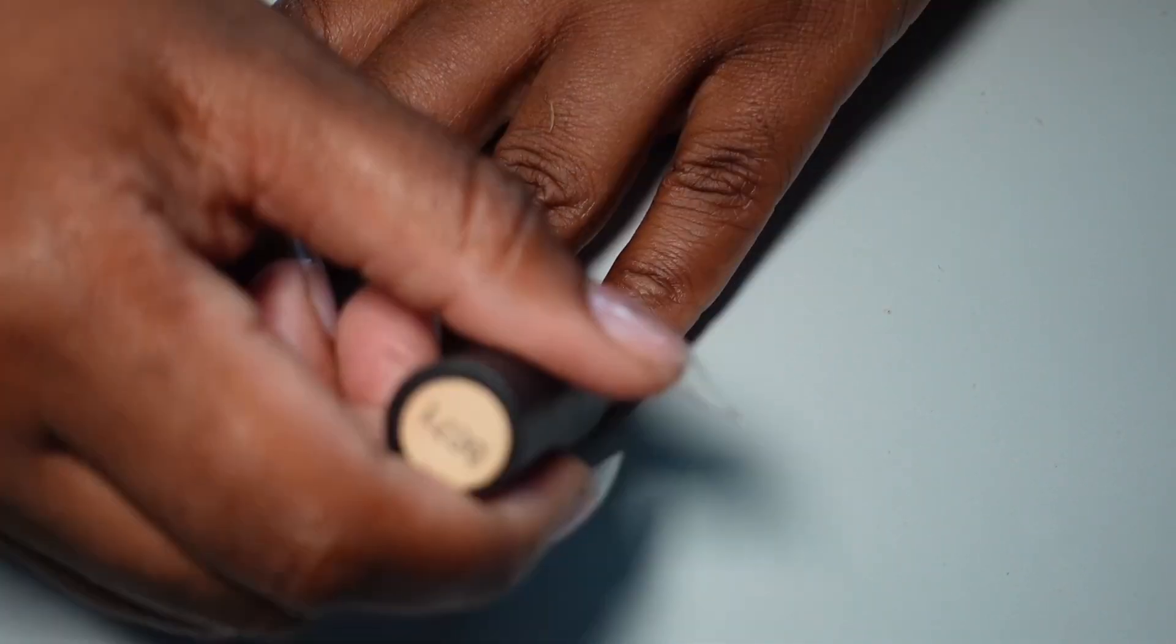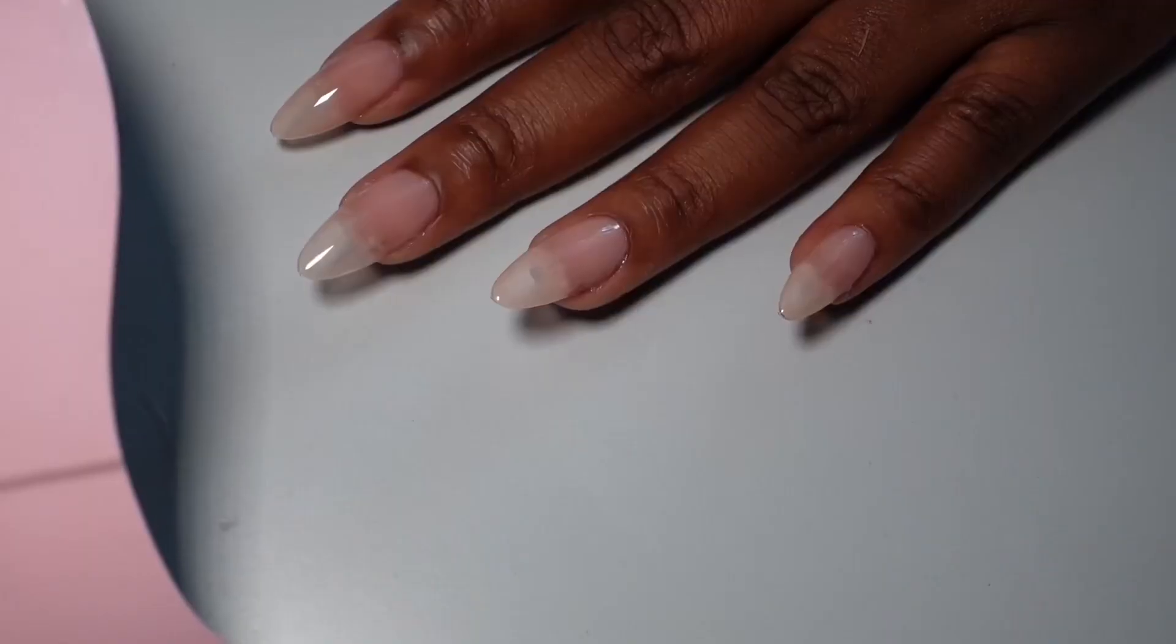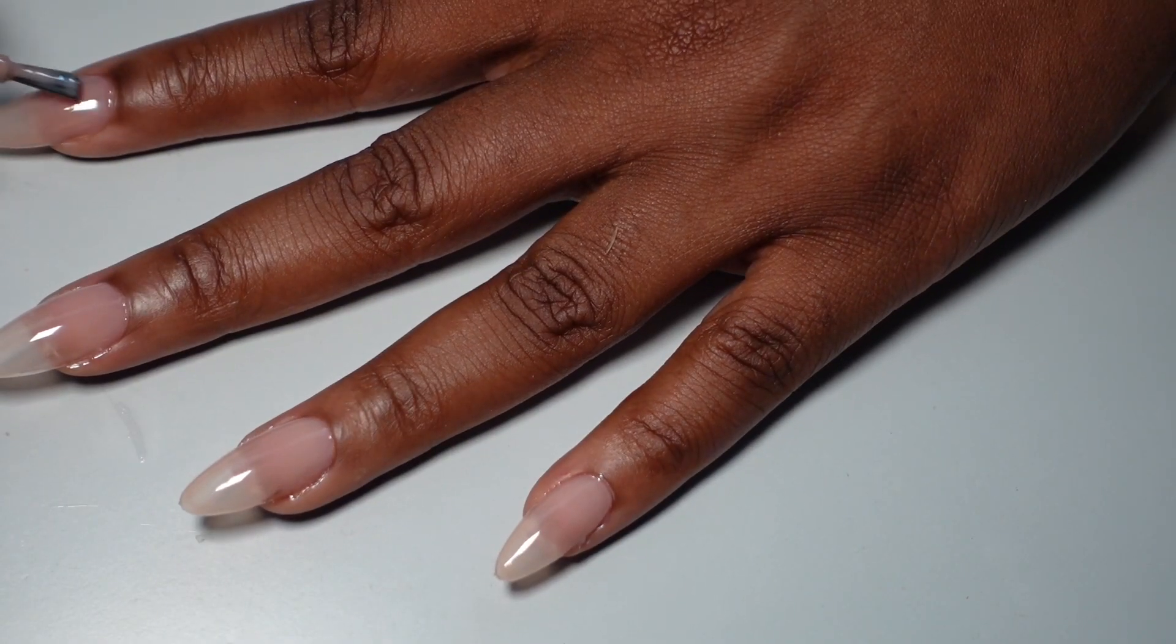It just looks light. And sometimes people like one coat, but for me to get the look that I was going for, I needed to do two coats. So I did the first coat, I put it under the light for 90 seconds. All my applications are going to be 90 seconds.